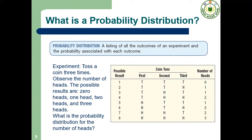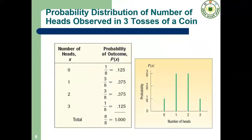Here the sample space is given. X denotes the number of heads, so the values of X are 0, 1, 2, and 3. The corresponding probabilities are 1/8, 3/8, 3/8, and 1/8. The probability distribution is presented in the graph.